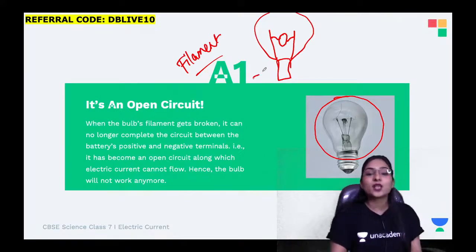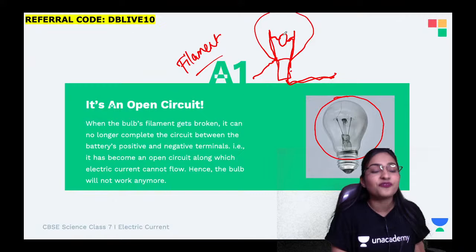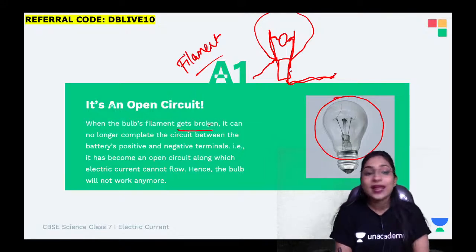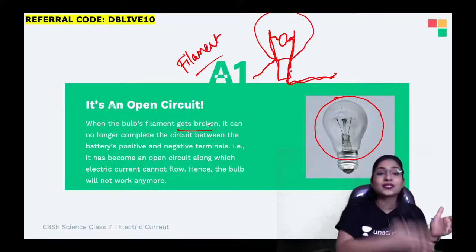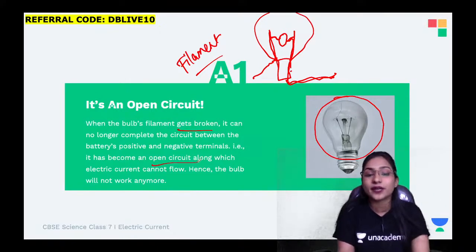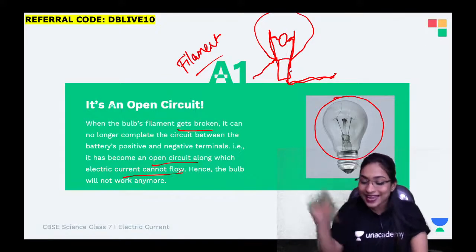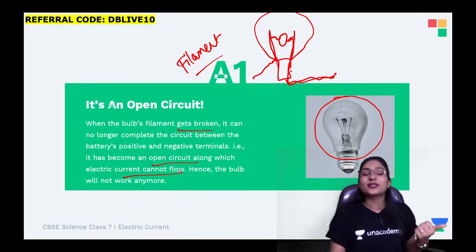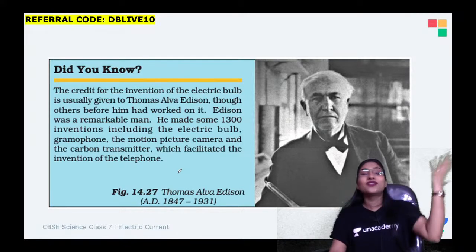If there is a gap in the filament, it also becomes an open circuit and the bulb will not glow. When the bulb's filament is broken, it can no longer complete the circuit between the positive and negative terminals, because the electricity passes from one terminal to another. It has now become an open circuit along which electric current cannot flow, so the bulb will not work anymore - it has become an incomplete circuit.